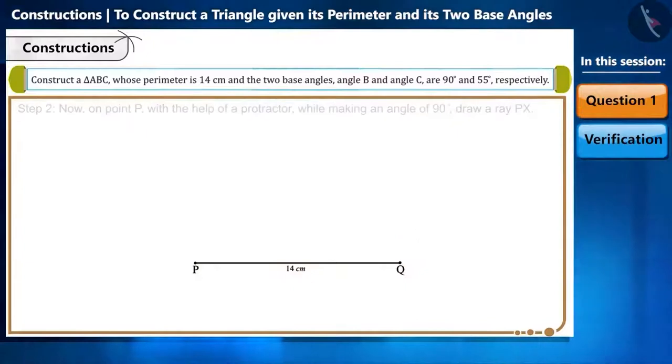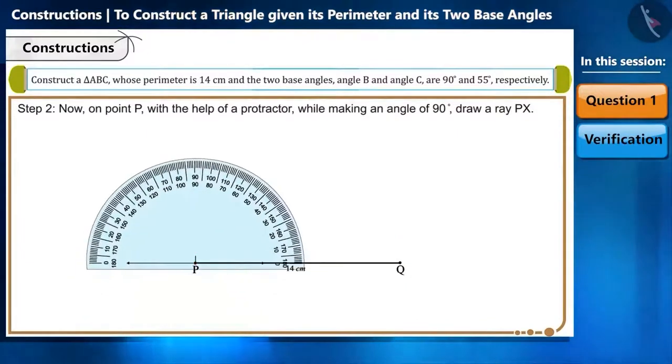Step 2: Now, on point P with the help of a protractor, while making an angle of 90 degrees, draw a ray PX.